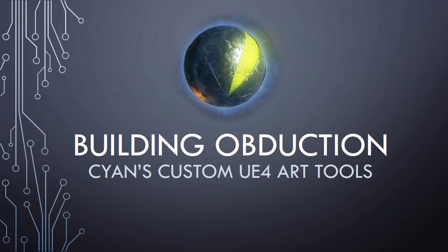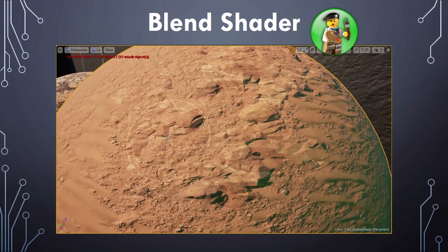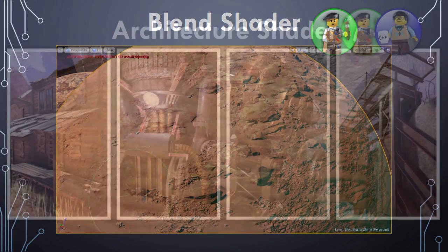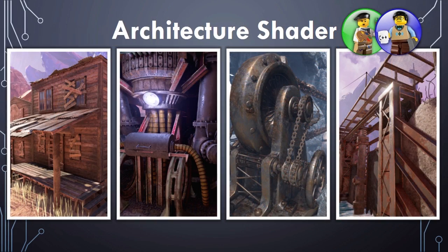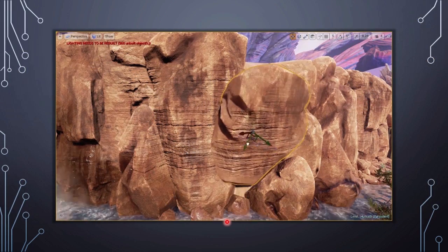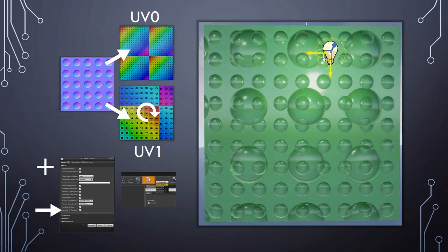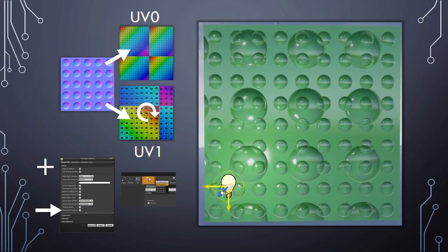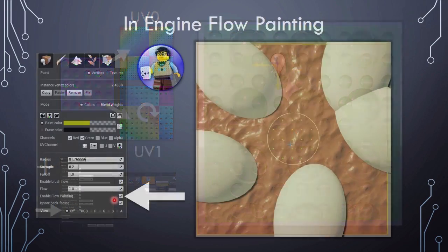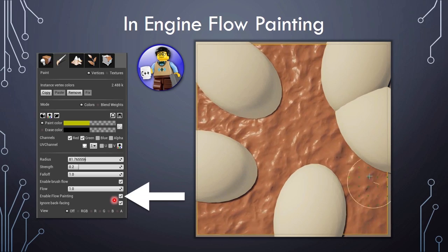The talk, which is entitled Building Abduction, covers all kinds of things, heavy in shaders. We cover things like a blended shader, an architectural shader, a rock shader. We're also going to cover some very intricate technical feats that we were able to accomplish, like blending multiple normal maps on different UV channels together. Some really interesting flow mapping tools, like an in-engine flow map painter.